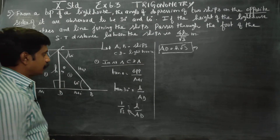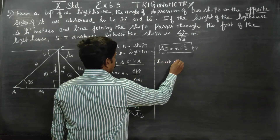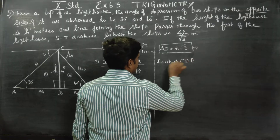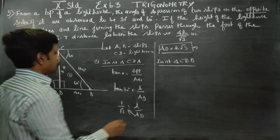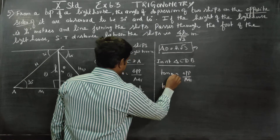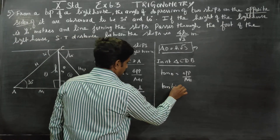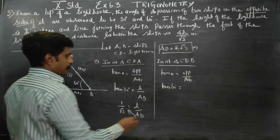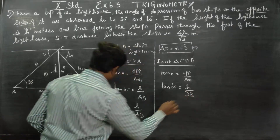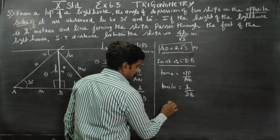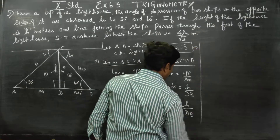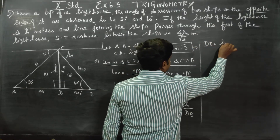Starting the second part: in right triangle CDB, tan θ = opposite / adjacent. tan 60° = H / DB. Since tan 60° = √3, we have √3 = H / DB.